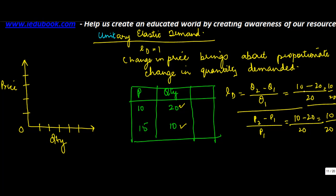I'm ignoring the negative signs here, so I get 10 divided by 20 divided by 10 divided by 20. So these cancel, and elasticity of demand comes to 1.